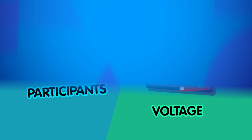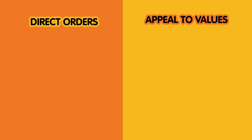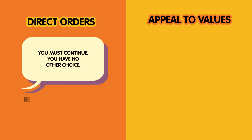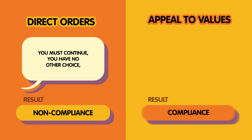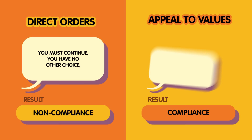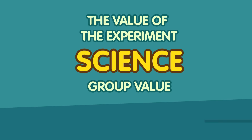But there's a lot more to it than that. If the experimenter gave direct orders to the teacher — like 'you must continue, you have no other choice' — that resulted in non-compliance; that's when the teacher was more likely to refuse. The prods that did produce compliance were the ones that appealed instead to the value of the experiment — the ones that said administering the shocks was necessary for the experiment to be successful and worthwhile. So in this instance, the value of the experiment, of science, was a strongly held group value, and it helped convince the subjects to continue, even though they might not have wanted to.